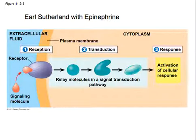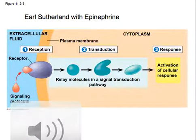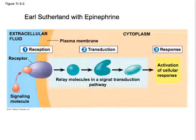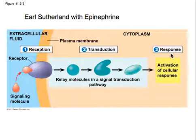This is Mrs. Valverde. Today we're going to be going over cell signals. There are a lot of different types of cell signals, and a lot of them are involved in immune system responses for organisms and the nervous system for any organism that has a nervous system. So let's start off with a basic cell system response — this was first figured out by Earl Sutherland, and he was working with epinephrine. Basically, what happens is we have three steps: reception, transduction, and the response.